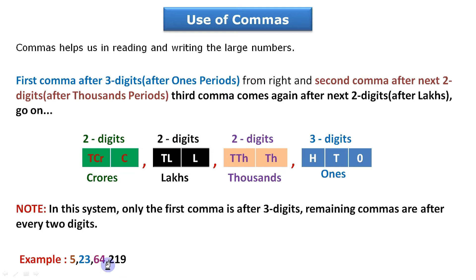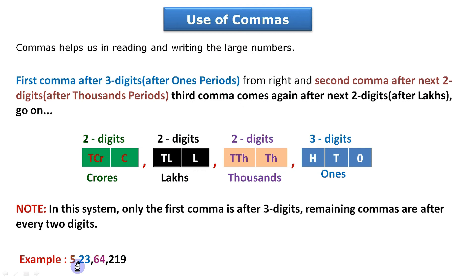First example: an eight-digit number. Put the first comma after three digits from the right — one, two, three — that is after the ones period. Then leave two digits for the second comma — thousands period. Leave two more digits for the third comma — lakhs period. Three commas total means we start reading from crores: five crores, twenty-three lakhs, sixty-four thousand, two hundred nineteen.